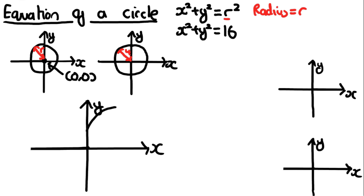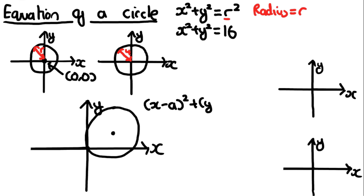Let's draw a circle that looks something like this, where the center is no longer going to be at (0, 0). What is going to be the equation of this circle? The equation of this circle is going to be x minus a, squared, plus y minus b, squared, is equal to r squared.